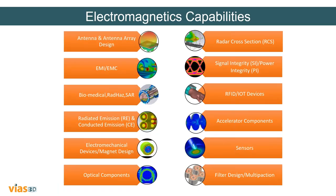From the electromagnetic capabilities, we have several tools to perform electromagnetic analysis. We have multiple projects in the design of antennas, biomedical and electromechanical services, optical and accelerated components, and sensor and filter design. If you're interested in any of these services, you can contact us directly and we'll be happy to help.